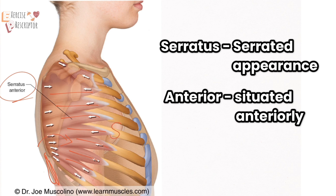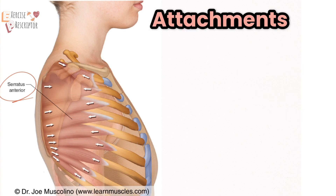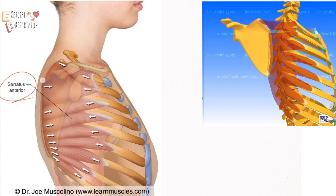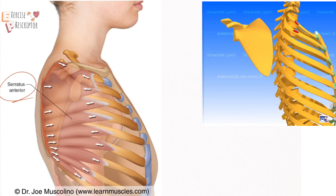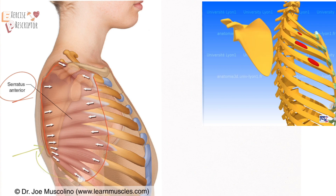Next we look at the attachments. The serratus anterior attaches the anterior surface of the entire medial border of the scapula to ribs one to nine. The scapular attachment is the more mobile attachment, so the scapular attachment is called the insertion.